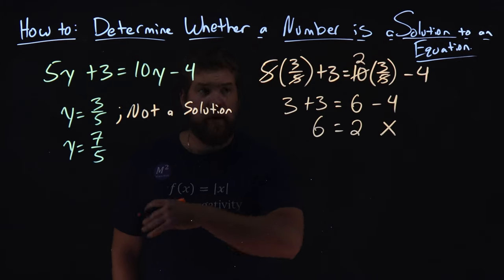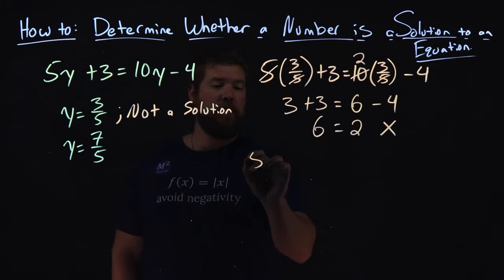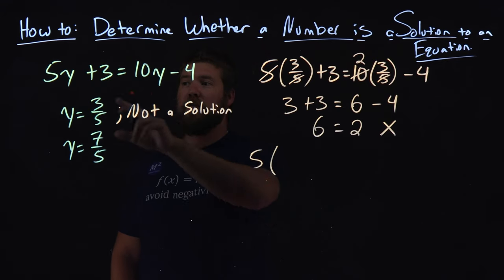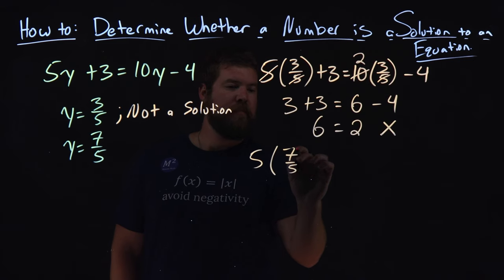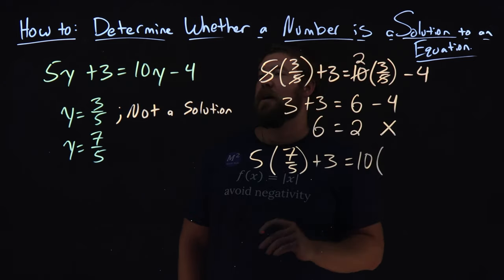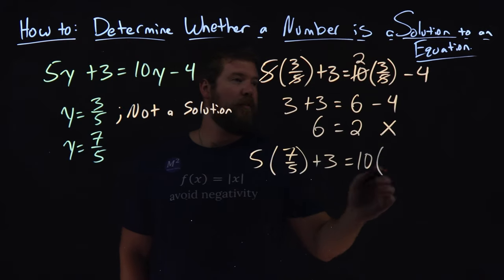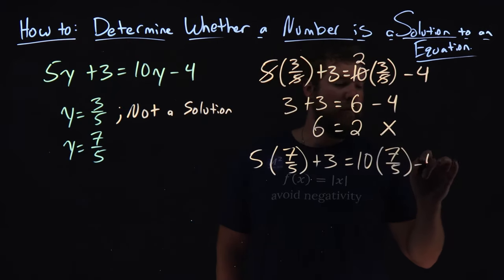But what about 7 fifths? Same process applies. We rewrite our equation 5 times, and instead of 3 fifths for y, we put 7 fifths. And take our time here, plus 3 equals 10 times, instead of y, we put 7 fifths here, minus 4 at the end.